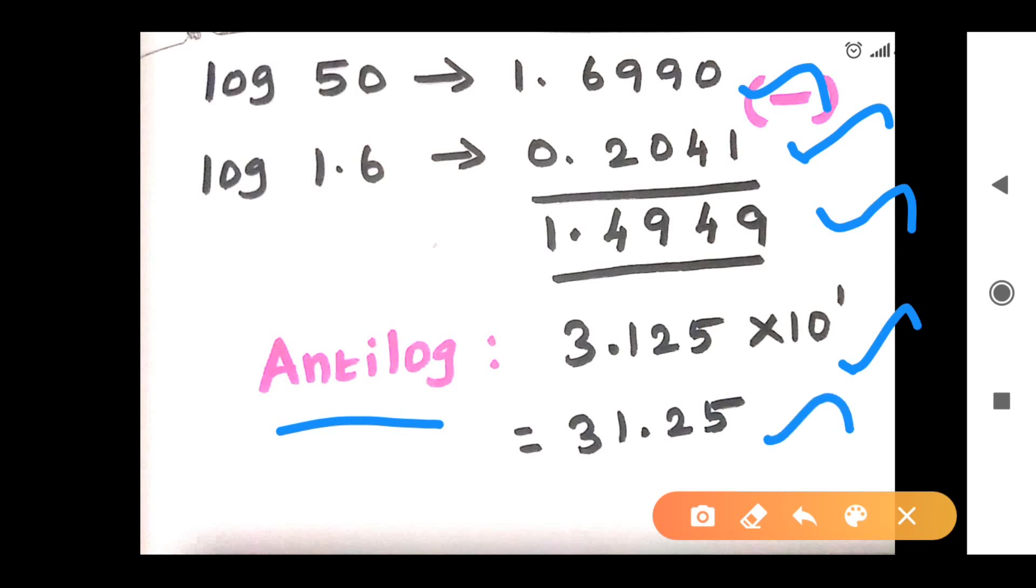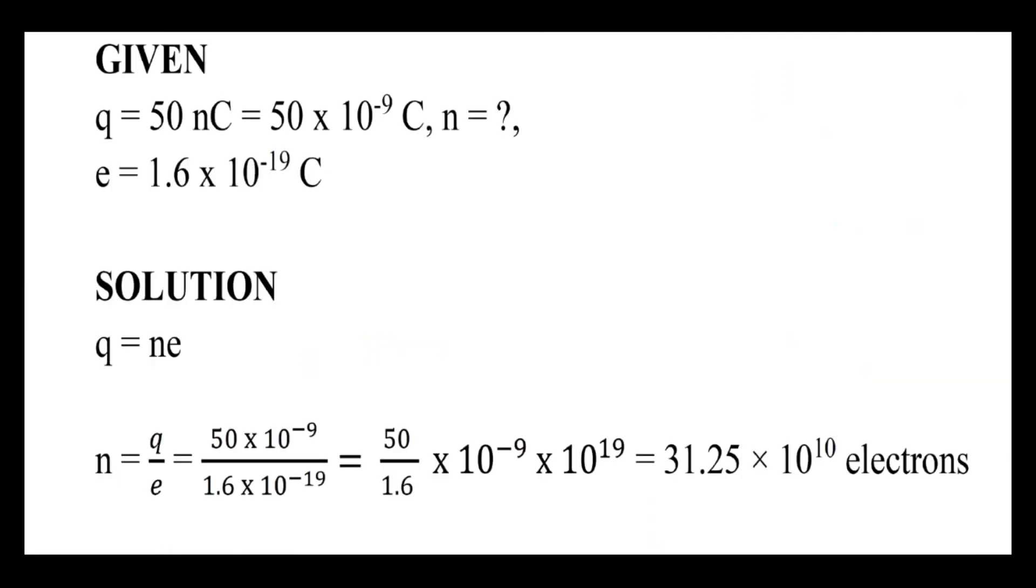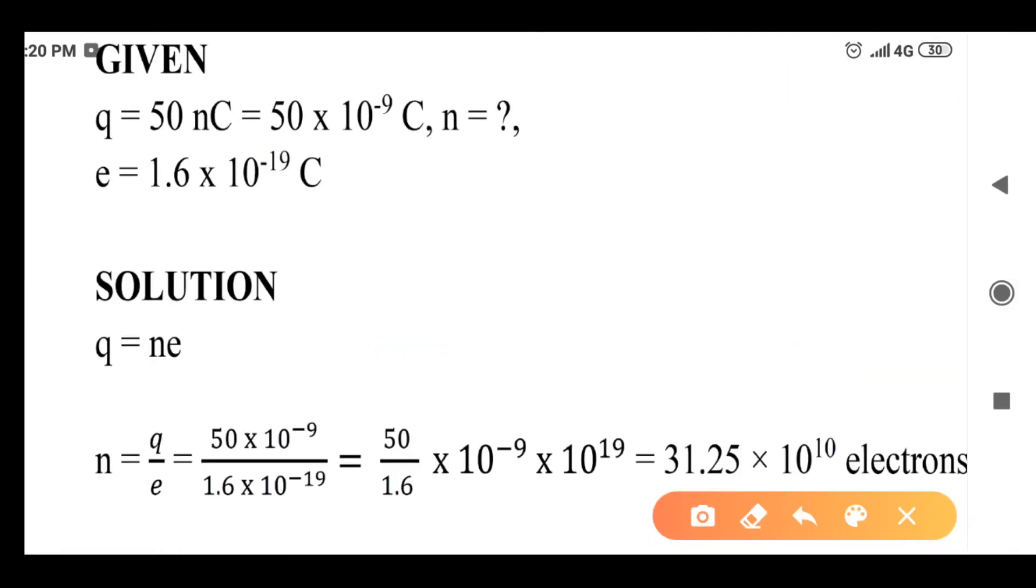In the 31.25, you will put it. 31.25 into 10 power 10, number of electrons that produces the charge 50 nanocoulomb.